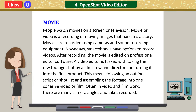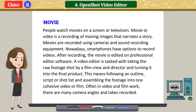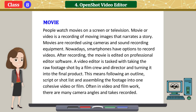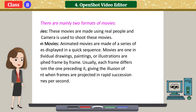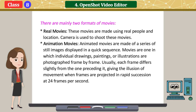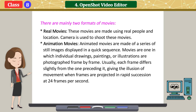This means following an outline, script or shot list and assembling the footage into one cohesive video or film. Often in video and film work, there are many camera angles and takes recorded. There are mainly two formats of movies. Real movies — these movies are made using real people and locations. A camera is used to shoot these movies.